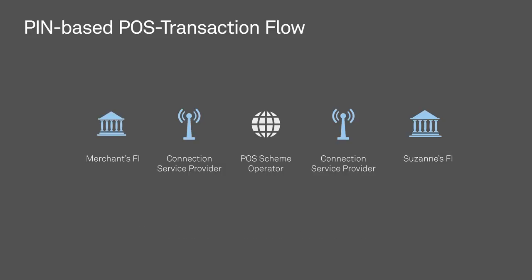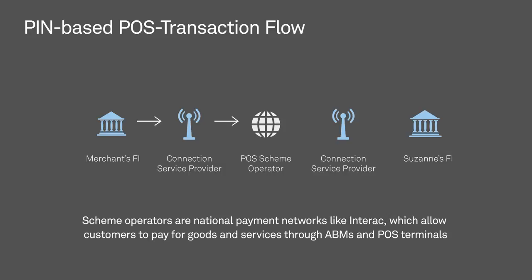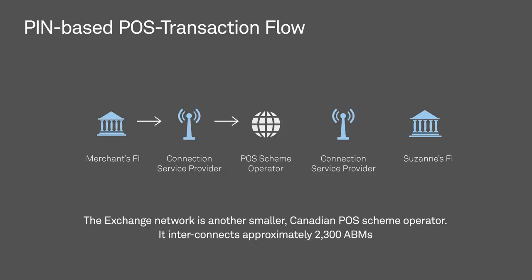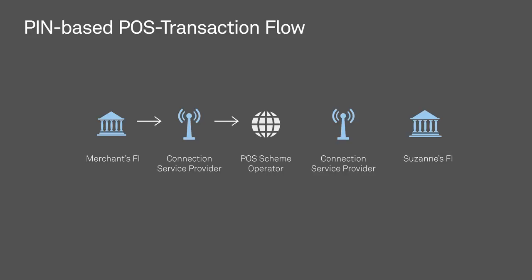Once the deli tallies up Suzanne's purchase, the counter clerk enters the purchase data into the POS device. A connection service provider routes the payment request in real-time over an online POS network to the POS scheme operator. Scheme operators are national payment networks like Interac, which allow customers to pay for goods and services or access their funds through ABMs and POS terminals across Canada. The Exchange Network is another smaller Canadian POS scheme operator that interconnects approximately 2,300 ABMs operated by some of Canada's smaller banks and the majority of credit unions. The scheme operator, in this case Interac, recognizes Suzanne's FI by the information captured by the POS device.